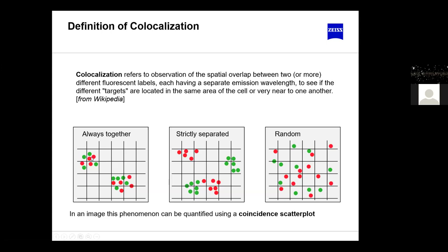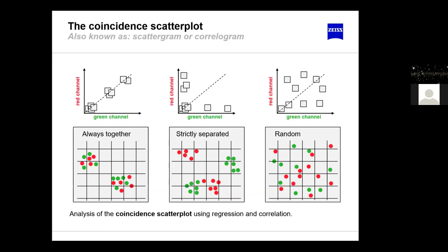To distinguish different cases: if green objects always occur together with red in a pixel, we'll have pixels that contain either nothing or both species. In the intermediate case, pixels will be either red, green, or occasionally both at the boundary. In a random distribution, all pixels can be anything. In an image, this phenomenon can be quantified using a coincidence scatter plot — the co-localization plot.